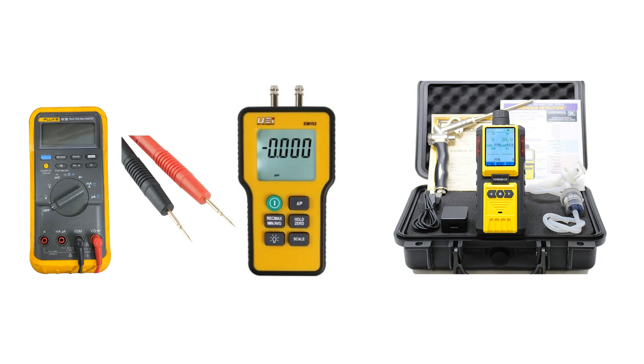If you are receiving an EA error code, there is no flame detected. To troubleshoot, you will need a multimeter, test leads, a gas manometer, and a combustion analyzer.